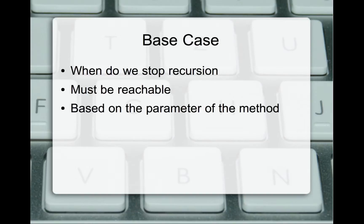The first thing we want to identify when looking at recursion is the idea of the base case. This is when we stop recursion — we have to make sure we actually stop. If we don't have a base case, we will cause infinite recursion because we'll never stop calling the same method over and over again, which causes a stack overflow. This has to be a reachable condition based on the parameter of the method — at what point of the parameter do we actually stop recursing?